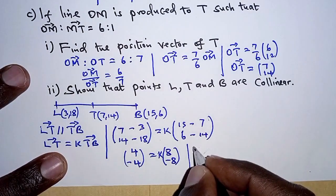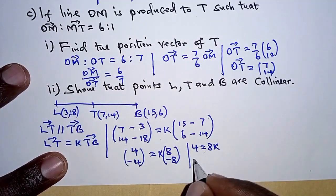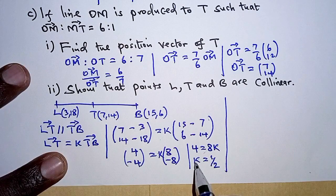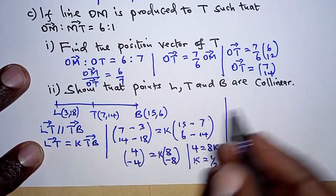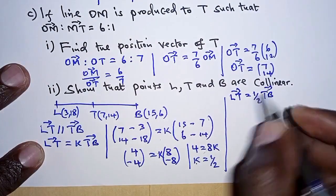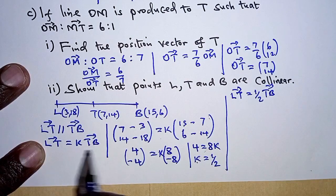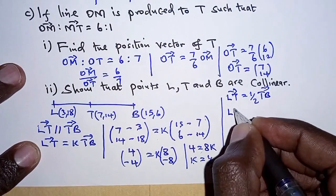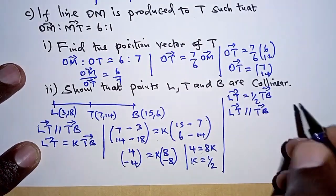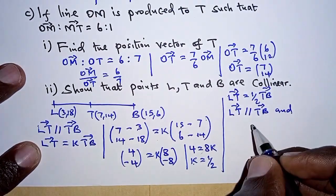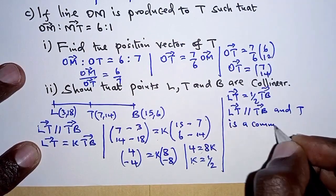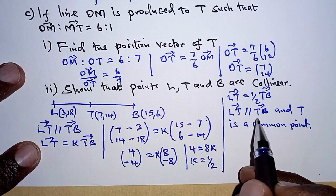Having determined K as 1/2, we substitute it back: LT equals 1/2 of TB. This implies that LT is parallel to TB, with scalar 1/2. Furthermore, there is a common point T shared by both vectors LT and TB. Therefore, points L, T and B are collinear.